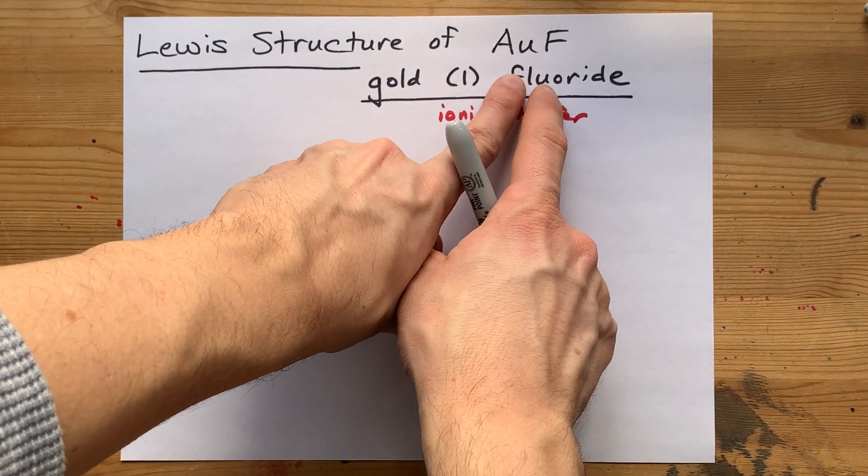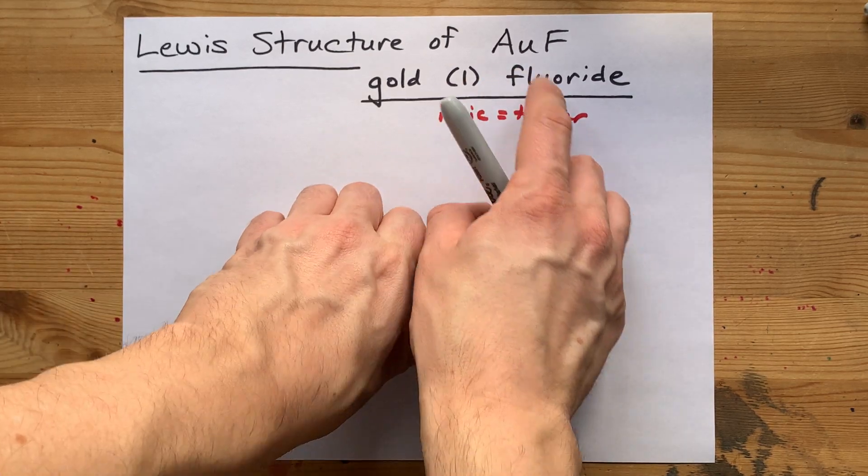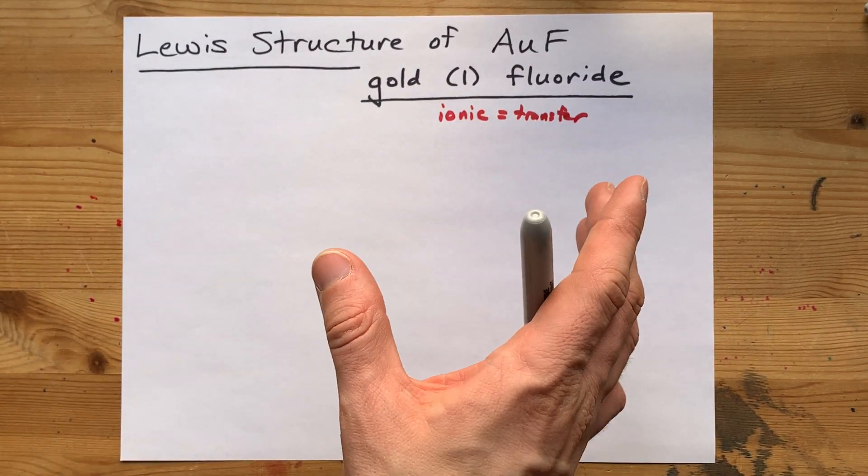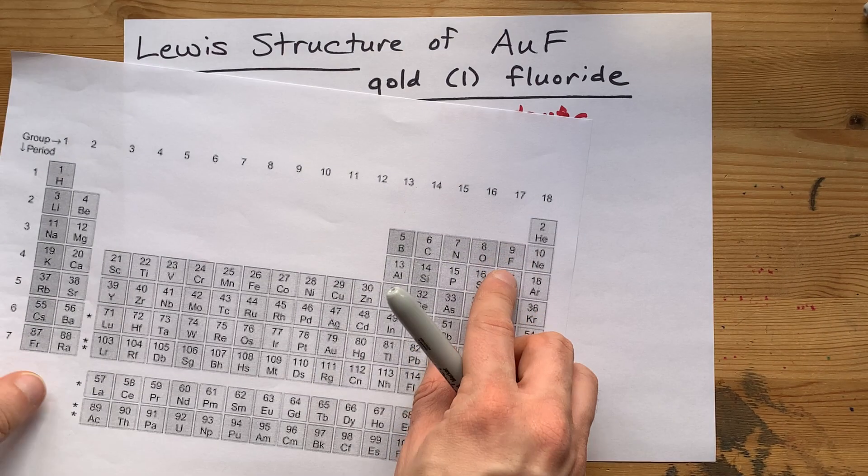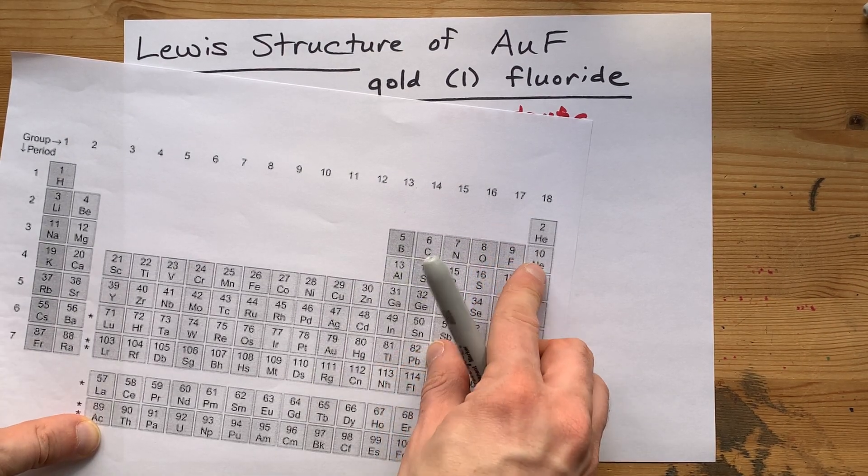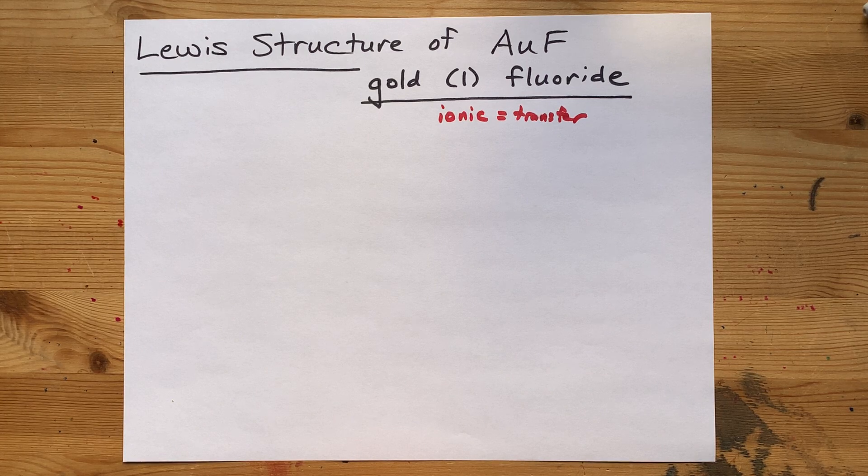In the formula, you can tell that it's a charge of one because fluorine wants a charge of one. You probably know that already, but if you don't, it's here in group 17, one electron short of a full octet.